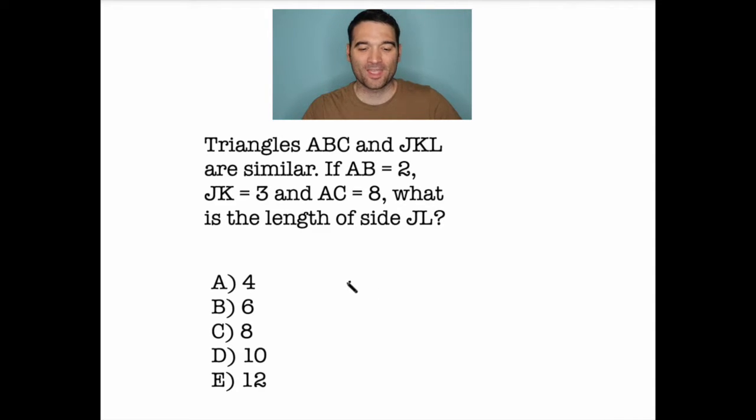Let's take a look at this GRE quant question. Triangles ABC and JKL are similar. If AB is equal to 2, JK is equal to 3, and AC is equal to 8, what is the length of side JL?